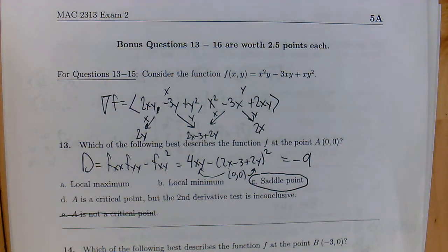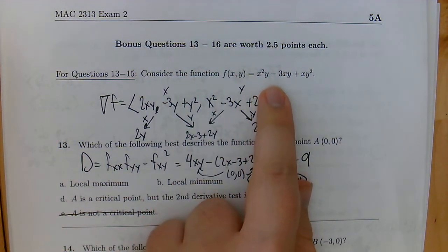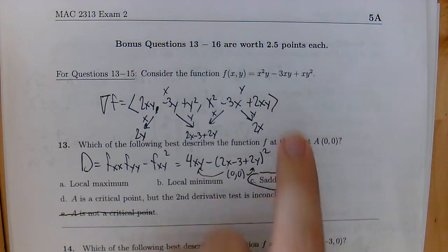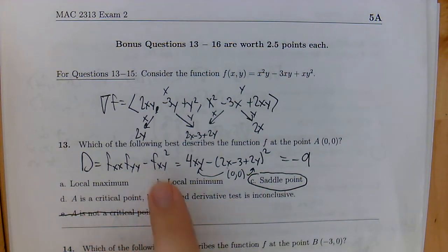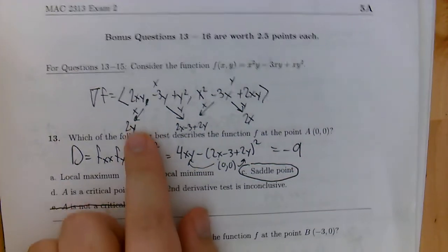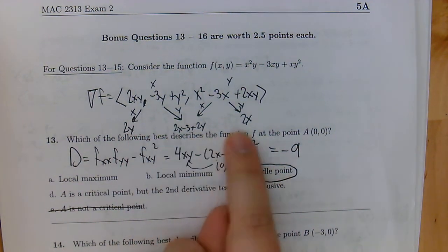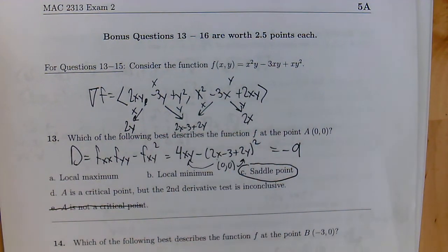All right, everyone, welcome to part two of our spring 2018 exam two review here. So where we left off, we got to problem 13, where we were looking at the function x squared y minus 3xy plus xy squared. We were taking a look at a few of the different critical points, starting with (0,0). We took the gradient just to make sure they were critical points, and then we looked at the second derivatives to classify the critical points.